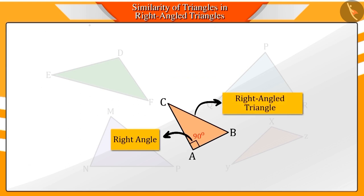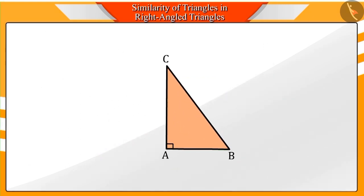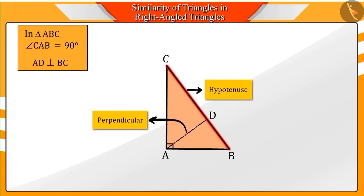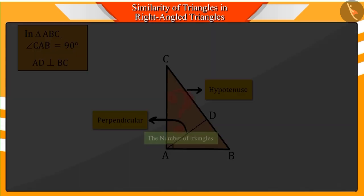Triangle ABC is a right-angled triangle. If we drop a perpendicular to the hypotenuse BC from the right angle of the triangle, which intersects the hypotenuse BC at point D, then how many triangles can you see in this triangle?